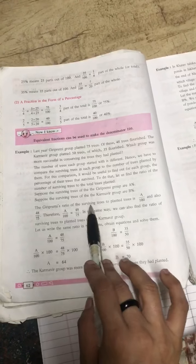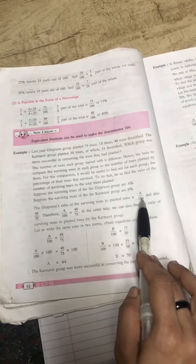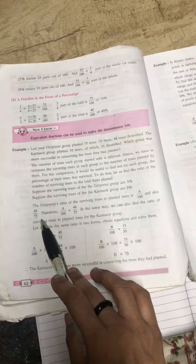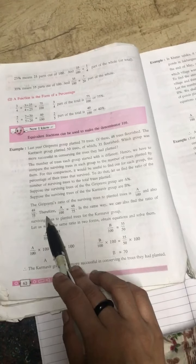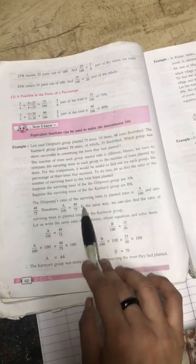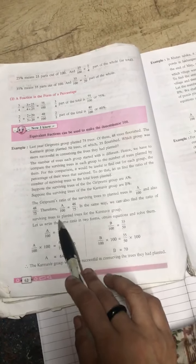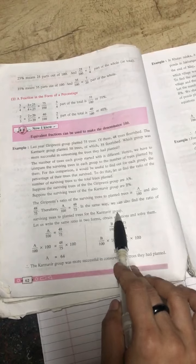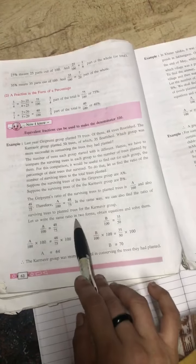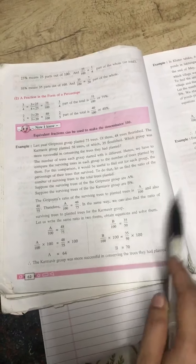The Giri Preemi's ratio of the surviving tree to planted trees is a upon 100 and also 48 upon 75. Therefore a upon 100 is equal to 48 upon 75. This becomes the first ratio. In the same way we can also find the ratio of the surviving trees to planted trees for the Karamvir group.